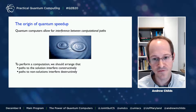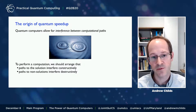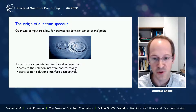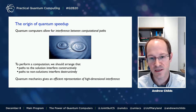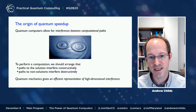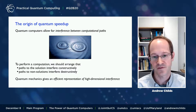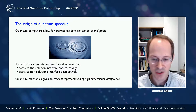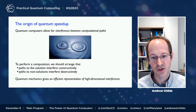Interference is not a uniquely quantum mechanical phenomenon — we can have interference on a pond too. But what's different about quantum mechanics is that it can give a very efficient representation of high-dimensional interference phenomena. This allows us to potentially have interference in an exponentially large state space that can sometimes allow us to solve problems really fast.